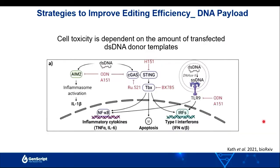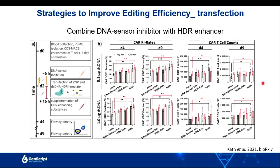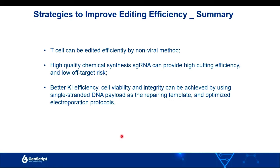By early 2021, a German research group reported that dsDNA toxicity is dependent on the dose of transfected double-strand DNA, and can trigger multiple innate immune responses leading to cell death or apoptosis. The authors combined a DNA sensor inhibitor with an HDR enhancer, providing a protocol that increased knock-in efficiency of both anti-CD19 CAR and BCMA CAR from about 20% to about 50%. The take-home message is that T cells can be edited efficiently by non-viral methods, and high-quality chemically synthesized single-guide RNA can provide high editing efficiency.